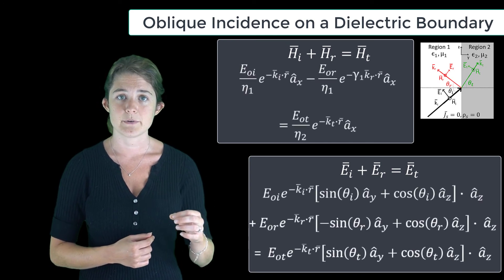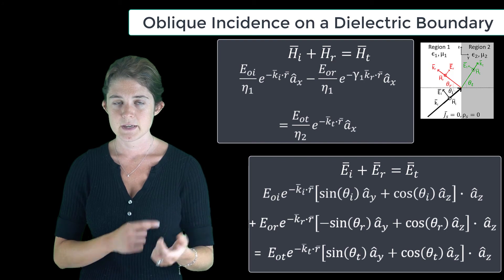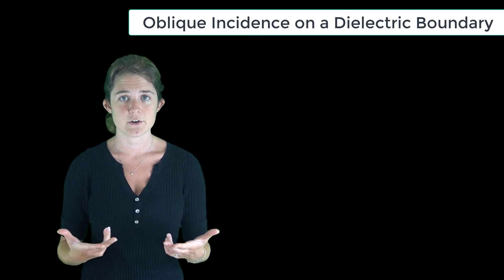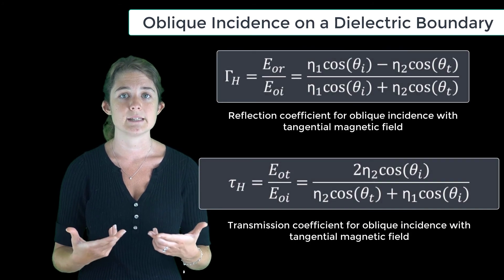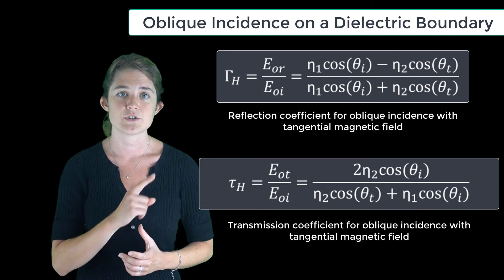We break out the tangential components of the electric field. These formulas combine to give the reflection and transmission coefficients for the oblique incidence tangential H case, shown here.